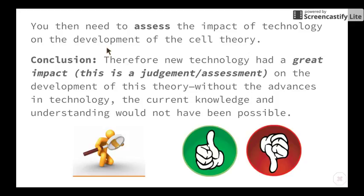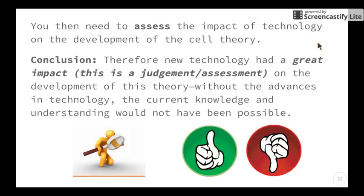You then need to assess the impact of technology on the development of the cell theory. To make an assessment, we need to look at the positives and the negatives, but then make an overall judgment as to whether it has been positive or negative. Our conclusion could sound something like: therefore, new technology has had a great impact — which is your judgment or assessment — on the development of this theory, because without the advances in technology, the current knowledge and understanding would not have been possible.